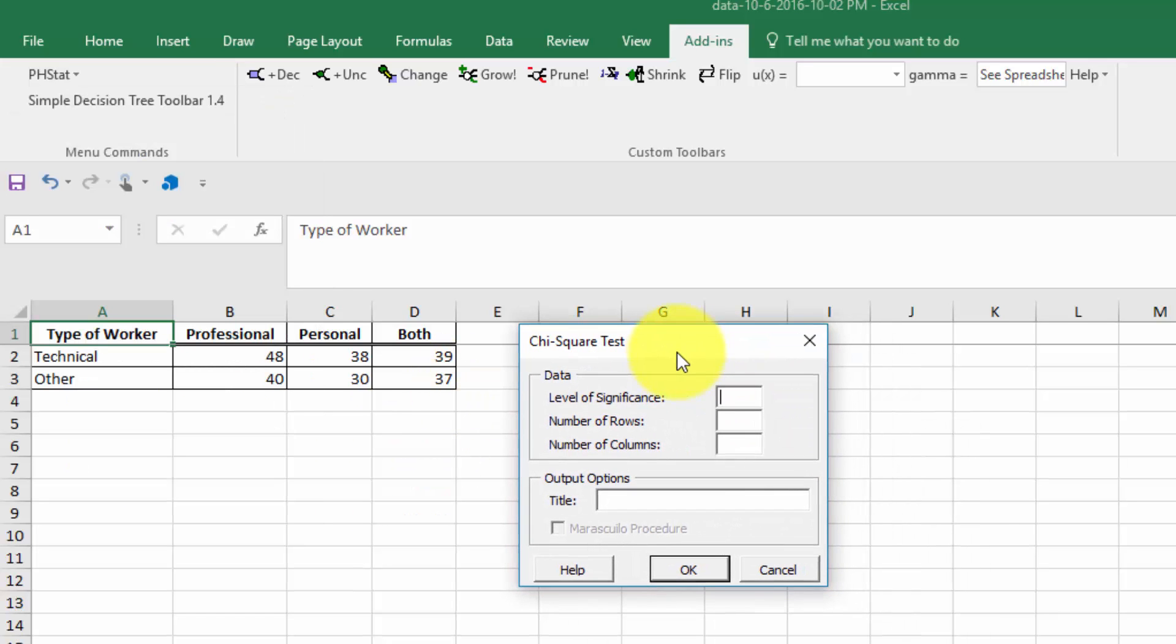We're given this dialog box. Our significance level was 0.01. Number of rows is 12. Number of columns is 123. And I'm just going to click OK.